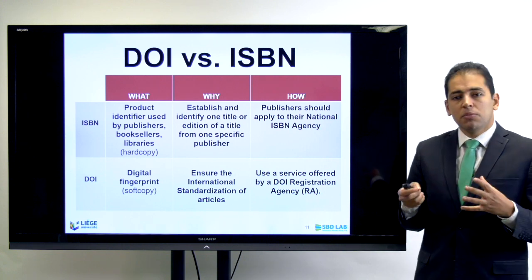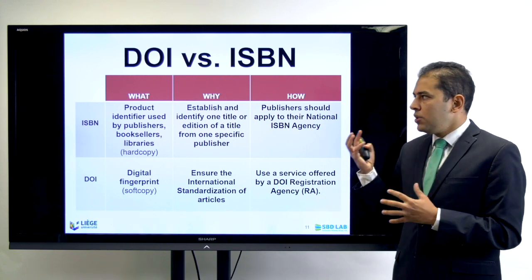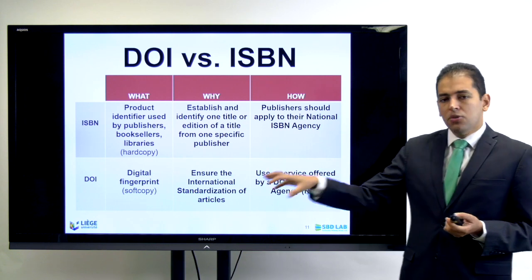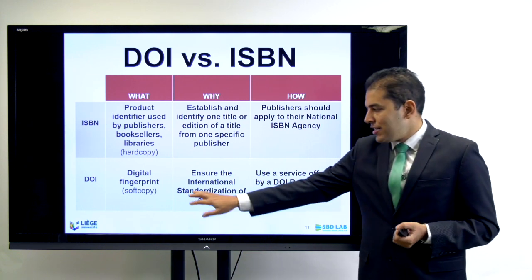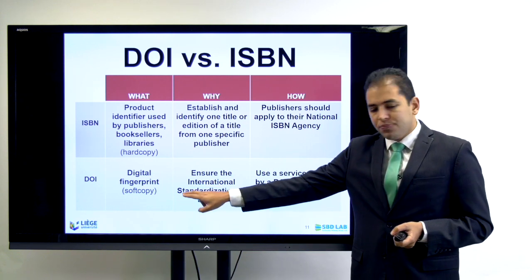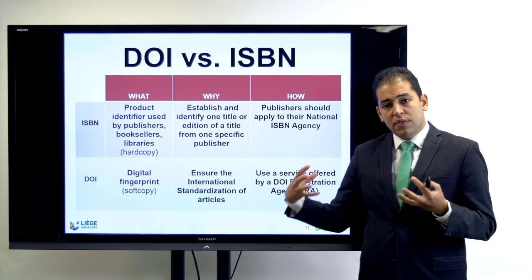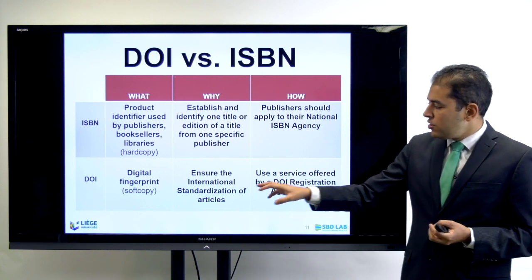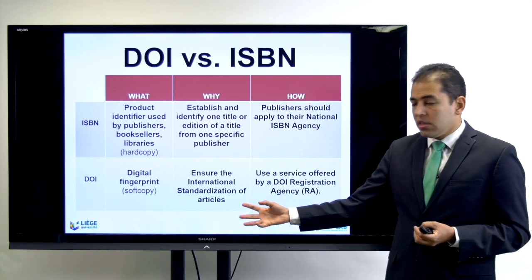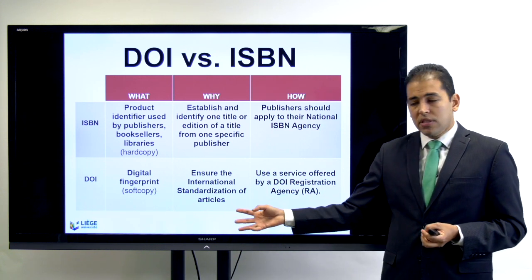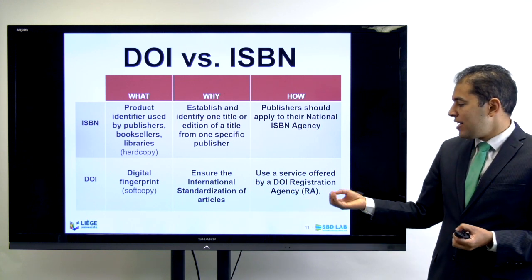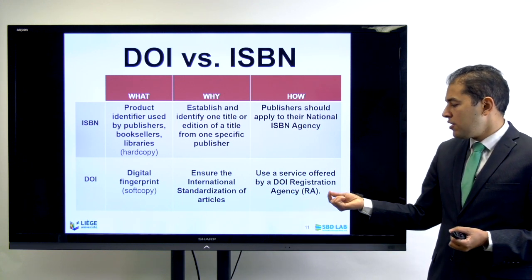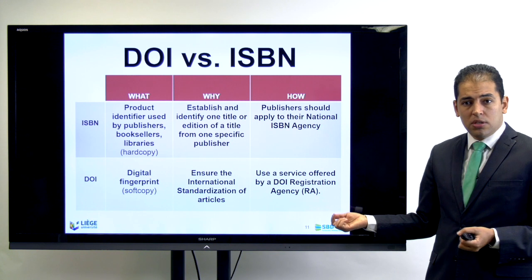What is the difference between a DOI and an ISBN number? The DOI is considered a digital fingerprint — a fingerprint for soft copies. It is used to ensure international standardization of articles and is offered as a service by a DOI registration agency.